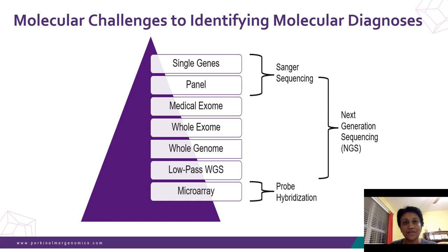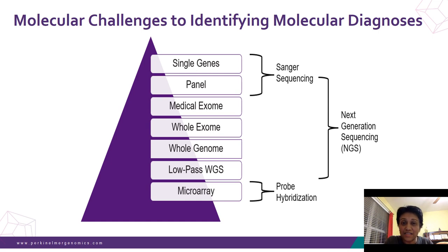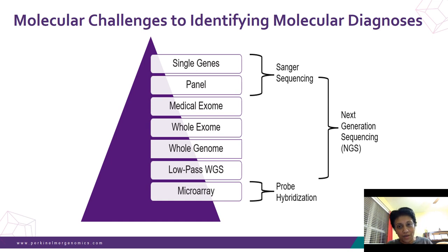There are many techniques available, and a physician generally orders based on the diagnosis. For a more precise diagnosis like Dravet syndrome, a single gene or panel may suffice. But when the clinical presentation is very broad and difficult to narrow down, we move to the medical exome (~5,000 genes), the full exome (~22,000 genes), or the genome which also covers intragenic and intergenic sequence.